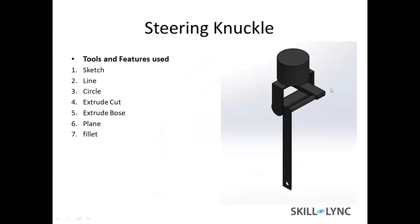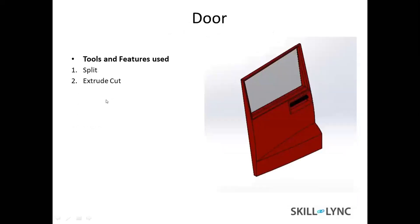This is the steering knuckle. A rod connected to the steering is connected here, and this will rotate above this cylinder. This is the door — I made it using the split function from the cabin.